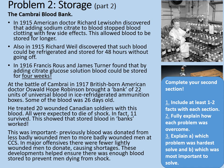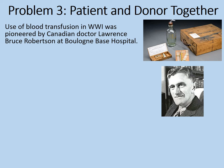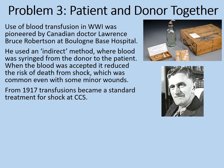We'll move on to problem three: patient and donor together. Use of blood transfusion in World War I was pioneered by Canadian doctor Lawrence Bruce Robertson at Boulogne Base Hospital. He used an indirect method where blood was syringed from the donor and then put into the patient. When the blood was accepted, it reduced the risk of death from shock, which was common even with some minor wounds. From 1917, transfusions became a standard treatment for shock at casualty clearing stations.